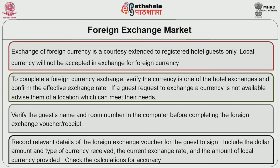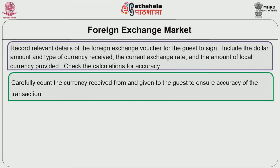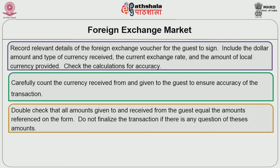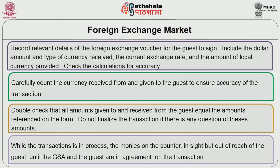Record all relevant details on the foreign exchange voucher for the guest to sign — include the dollar amount and type of currency received, the current exchange rate, and the amount of local currency provided. Check the calculations for accuracy. Carefully count the currency received from and given to the guest to ensure accuracy of the transaction. Double check that all amounts given to and received from the guest equal the amounts referenced on the form. Do not finalize the transaction if there is any question about these amounts. While the transaction is in process, the money is on the counter in sight but out of reach of the guest until the GSA and the guest are in agreement.